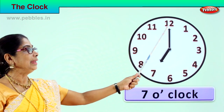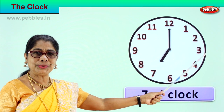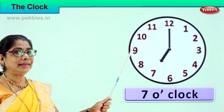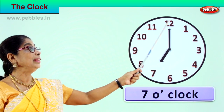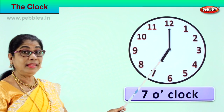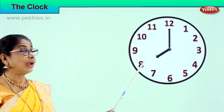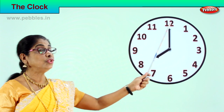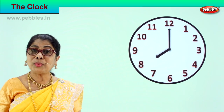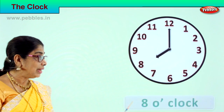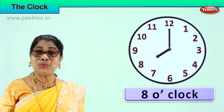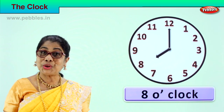Now the minute hand goes again from one to two, all the way to eleven, and comes back to twelve. The hour hand from seven shifts to eight. Now look at the position — the hour hand is on eight and the minute hand is on twelve. How do you read the time? You read it as eight o'clock. Good.